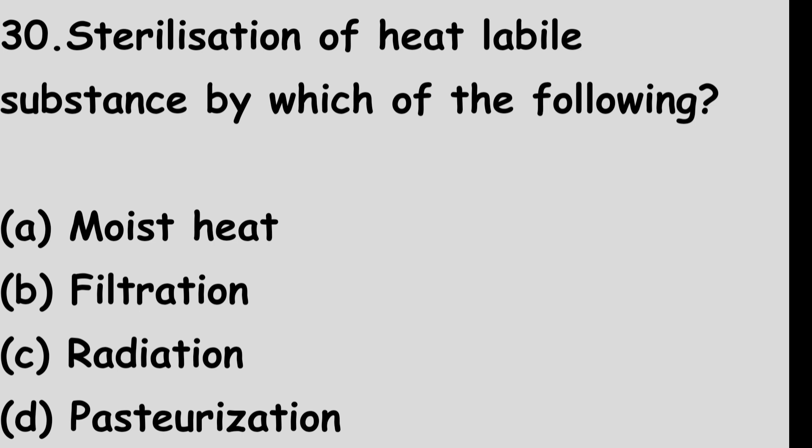Question number 30: Sterilization of heat labile substances is done by which of the following? Option A: Moist heat. Option B: Filtration. Option C: Radiation. Option D: Pasteurization. Heat labile substance means heat sensitive substance. The right answer is option B, filtration. Filtration is used for the sterilization of heat sensitive substances.